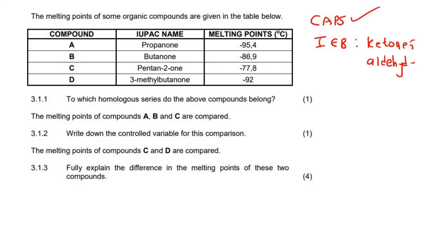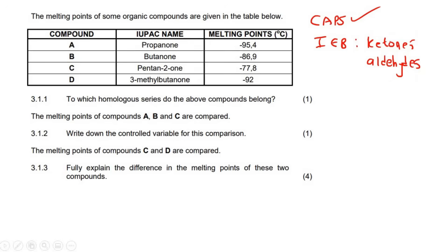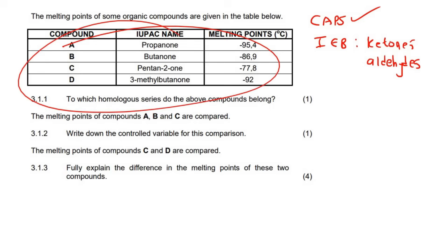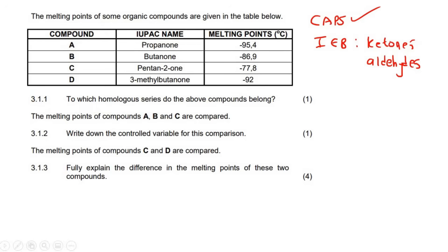If that has changed, then of course you can now do this question. But this question is going to be looking at one of these. I won't say exactly which one - I don't want to spoil the fun. So for IEB learners, you can choose to do this question or skip it. I would actually say try doing it just to see how we approach it, because in your exam you're going to get something exactly like this, but they're just not going to have aldehydes or ketones - they're going to have alcohols, for example.